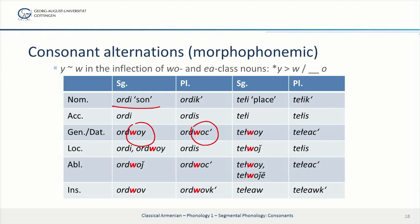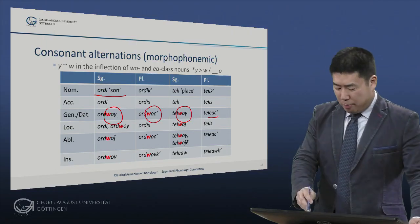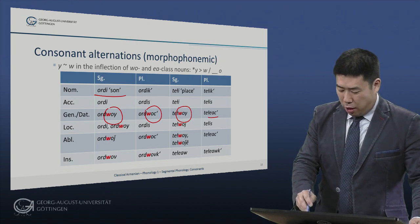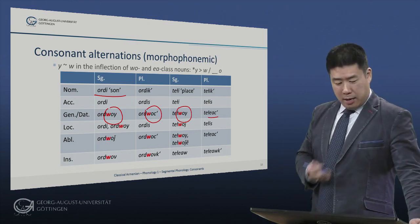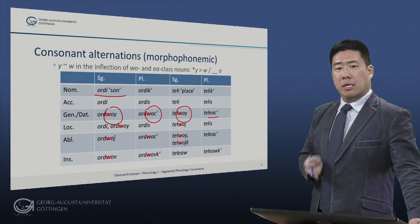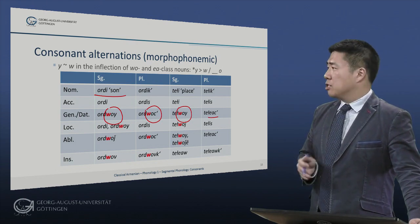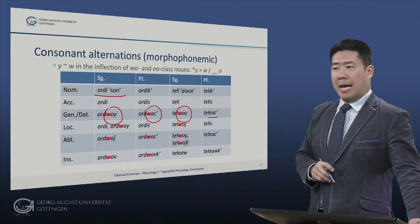In the paradigm of the noun 'tel-i' meaning place, we similarly have 'tel-woi', but you'll notice in the plural, where the ending is -ats, there is no such dissimilation. We do have the Y, and that produces the diphthong EA in 'tel-yats'. So this alternation is very important in nominal inflection in two large classes of nouns.